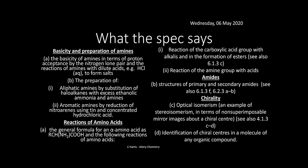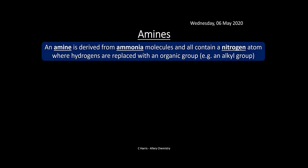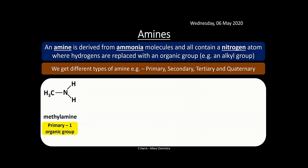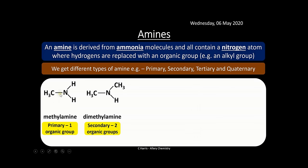Everything in this video is what you need to know for OCR A. So let's look at amines first. An amine is derived from ammonia, which is NH3. It contains a nitrogen atom where hydrogens are replaced with an organic group, such as an alkyl group. We get different types: primary, secondary, tertiary, and quaternary amines. A primary amine — for example methylamine — has one methyl group attached to the nitrogen. A secondary amine, dimethylamine, has two methyl groups attached.